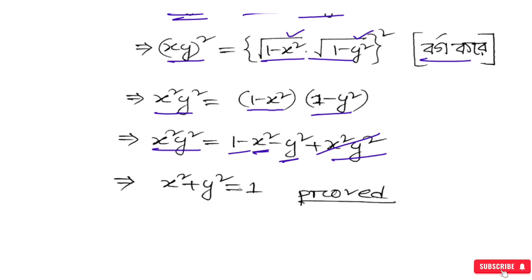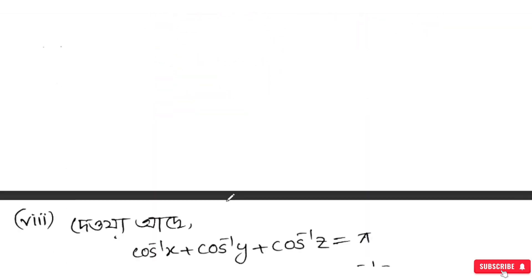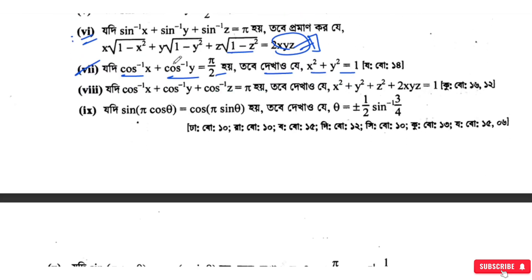So x² and y² cancel out. We are left with x² + y² = 1. By the second method: cos⁻¹x + cos⁻¹y, where x² + y² + 2xy = 1, two xy, so it is going to give x² + y² = 1. Okay, proved.